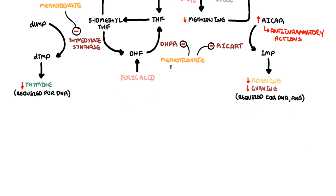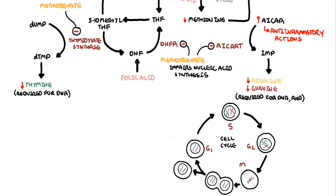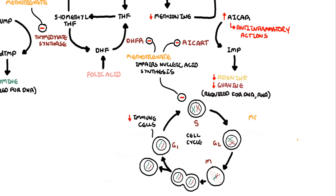Impaired nucleic acid synthesis suppresses rapidly dividing cells such as immune cells, and this will essentially disrupt the S phase of the cell cycle, which is responsible for making DNA. Thus in rheumatological diseases such as rheumatoid arthritis and psoriatic arthritis, methotrexate is immunosuppressive and reduces inflammation and joint destruction.